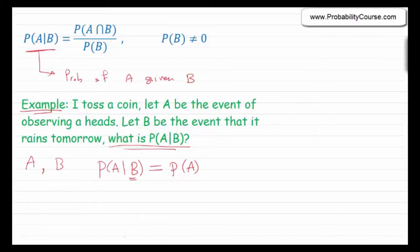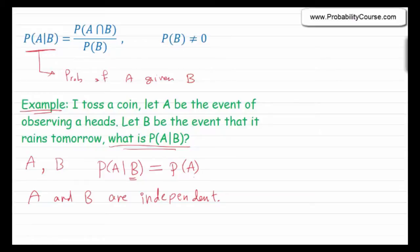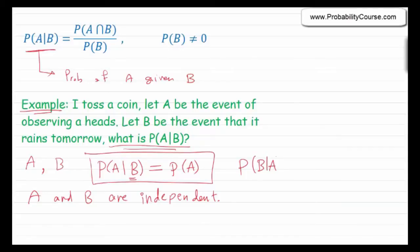And you are absolutely right. What you are saying here is that A and B are two independent events. We say that two events are independent if, knowing that one of them has occurred, the probability of the other one does not change. In other words, the conditional probability of A given B is the same as the probability of A, and similarly the conditional probability of B given A is equal to the probability of B. You can easily see that these two conditions are equivalent.